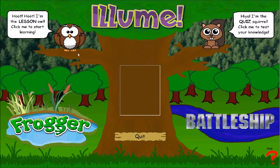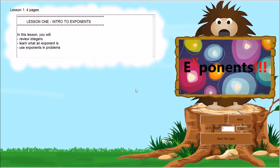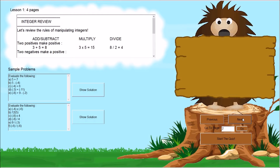Clicking Play brings the user to the main menu. To select a lesson to begin, the user may click the OWL and then select the lesson from the list that is displayed. The lesson page contains information, graphics, and sample problems.